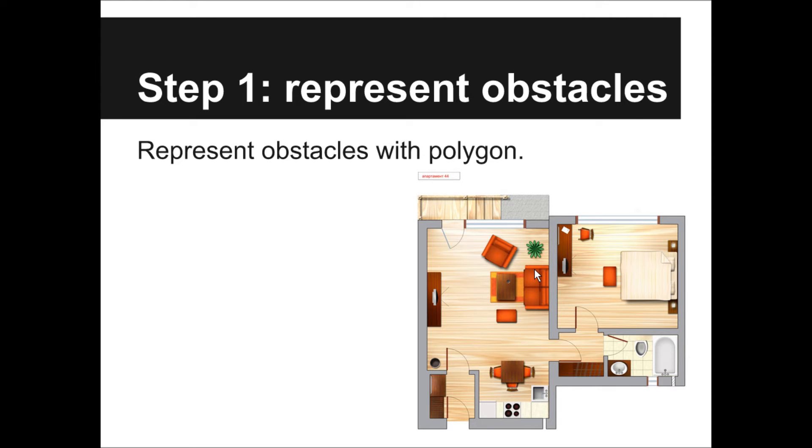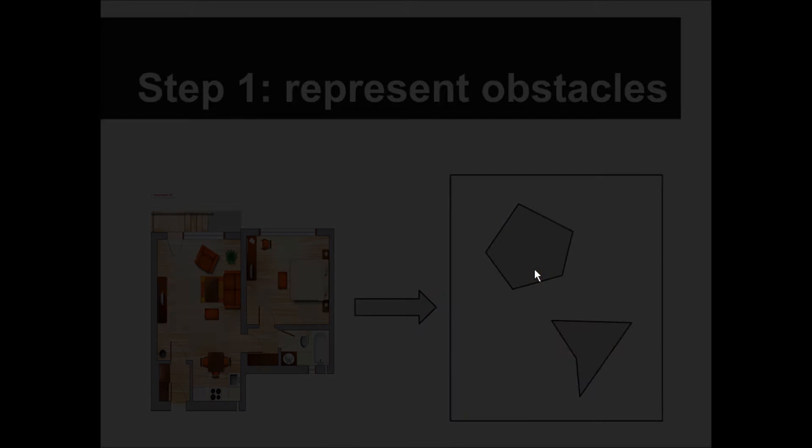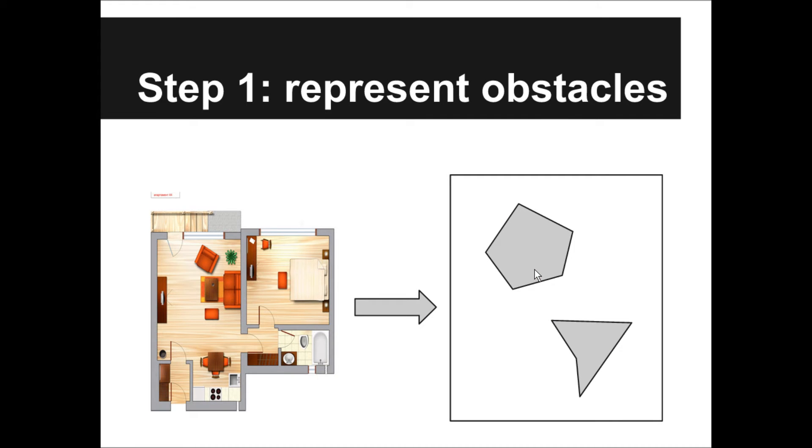First, we need to represent the obstacles as polygons. Obstacles can be a wall, a bench, etc. Some objects have a round shape like a commode, but we still approximate them as polygons. In this way, we change the image on the left to a set of polygons on the right.